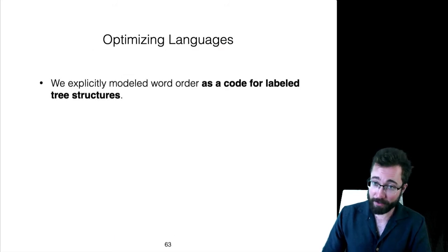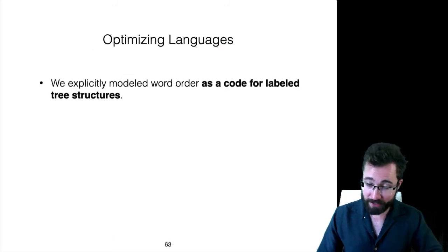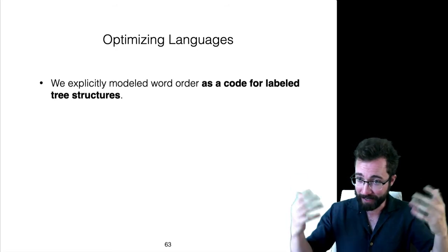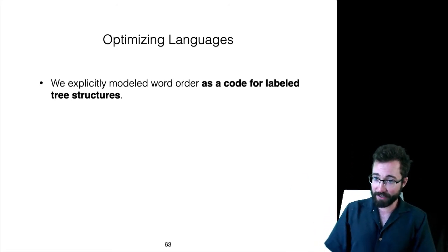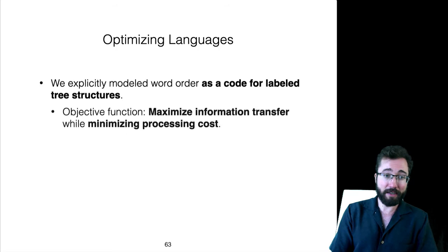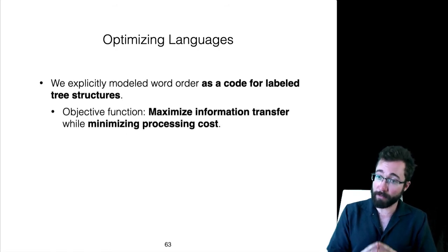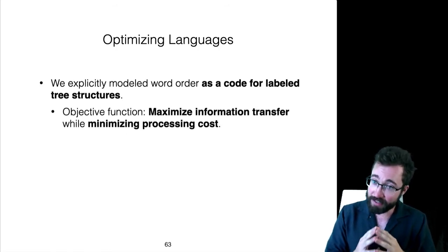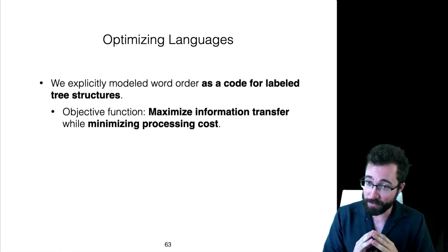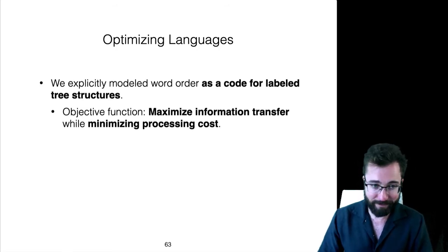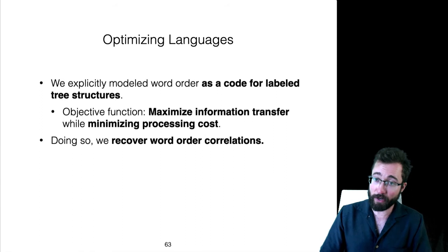We've explicitly modeled word order as a code for labeled tree structures. We took that sort of very abstract idea from the beginning of the talk and made it completely explicit. The objective function is to maximize information transfer while minimizing processing cost using this idea of surprisal with lossy representations of context. In doing so, we recover the Greenbergian word order correlations.